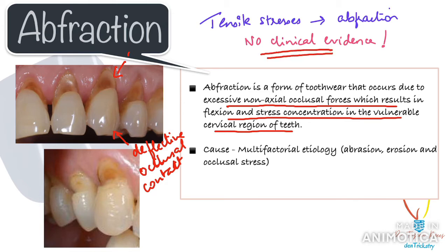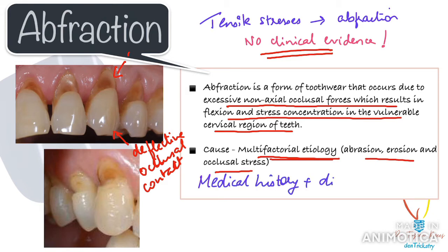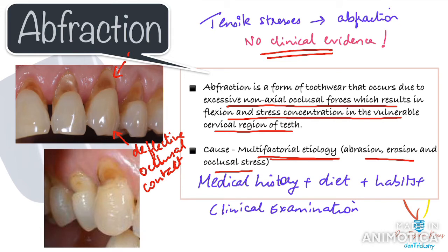Current evidence suggests that abfraction has a multifactorial etiology — it is a result of a synergistic effect from abrasion, erosion, and occlusal stress. So for a correct diagnosis of abfraction, you need a proper medical history involving anything which results in erosion, proper diet history, habits involving para-functional activities like clenching or bruxism, and clinical examination to rule out any occlusal discrepancies.